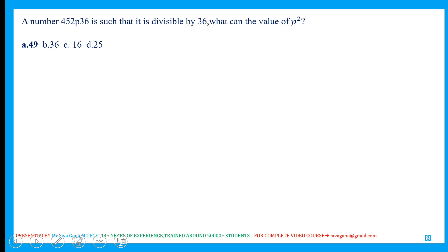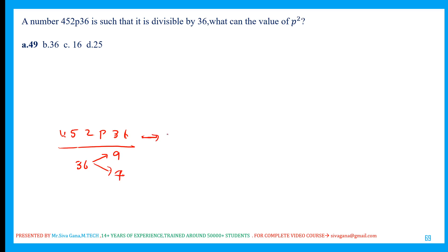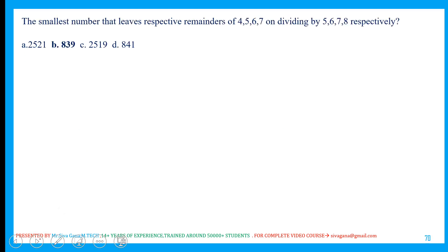The number 452p36 is divisible by 36. If a number is divisible by 36, it must be divisible by both 9 and 4. Applying the divisibility rule of 9: the sum of digits of 452p36 is 20 plus p. For 20 plus p to be divisible by 9, p should be 7, since 20 plus 7 equals 27, and 27 divided by 9 works. So p is 7, and p squared is 49.